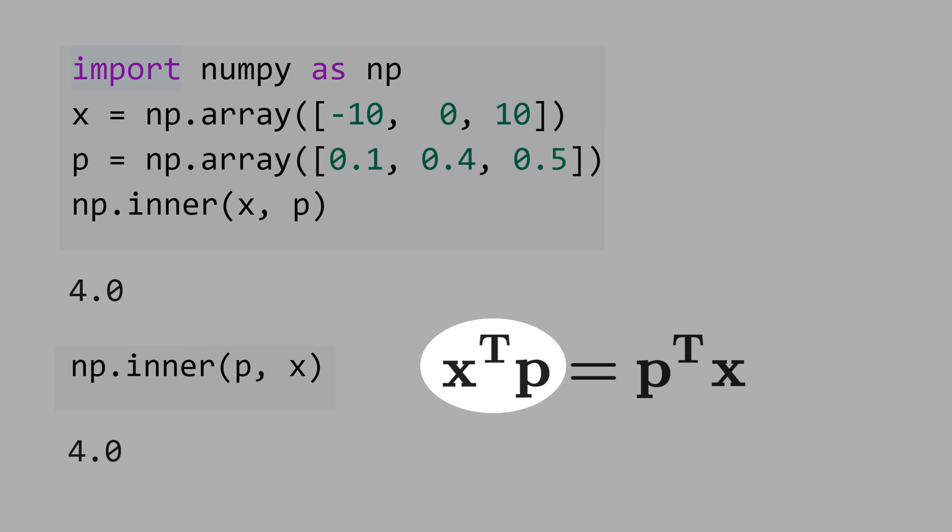See that mathematically, to multiply x times p, you have to put this t transpose in the first vector. If you want to switch the order p times x, you need the t transpose for the p here.